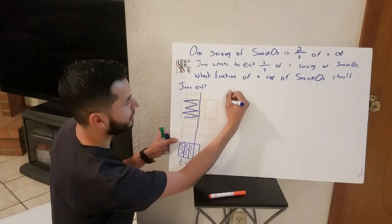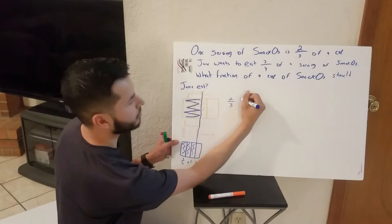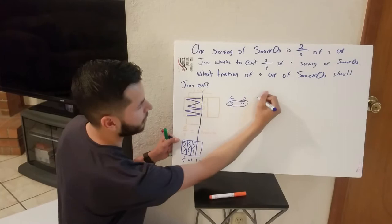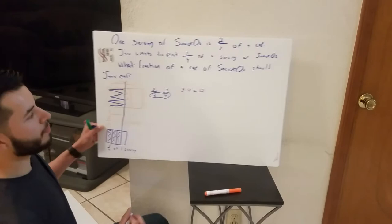So we know that this is two-thirds and we know that this is three-fourths, and we can find the common denominator by multiplying the two denominators. So let's go ahead and do that, giving us 12. So our new math drawing will be in 12, so let's go ahead and do that.